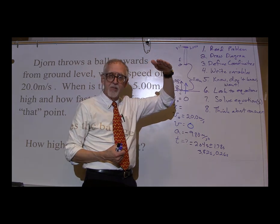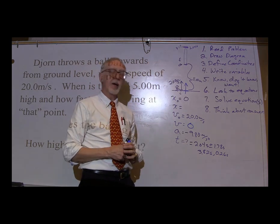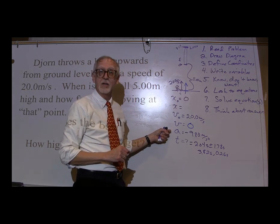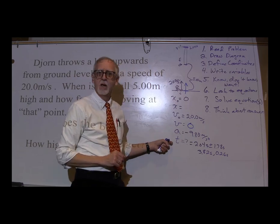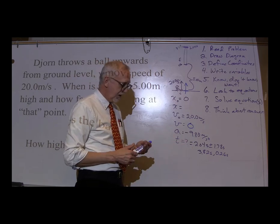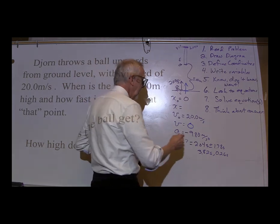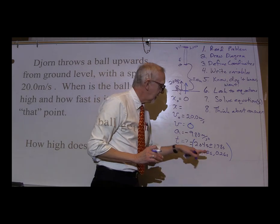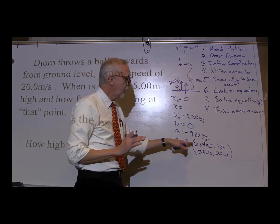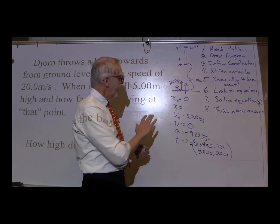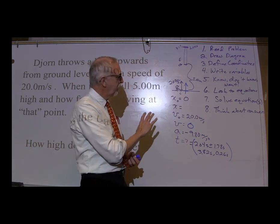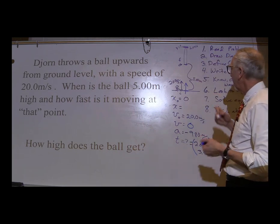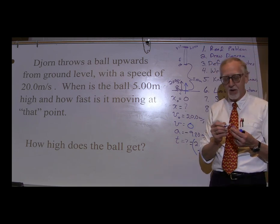It's turning around and changing from a positive velocity to a negative velocity. Acceleration is still negative 9.80 meters per second squared. Time is different for this part. We've got a new problem here. We're looking for how high — what is the height? What is x? So in this case, we're looking for x.